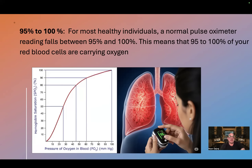In this diagram, the vertical axis is labeled from 0 to 100% for hemoglobin saturation. On the horizontal axis, you see the partial pressure of oxygen in blood in millimeters of mercury, ranging from 0 to 100.